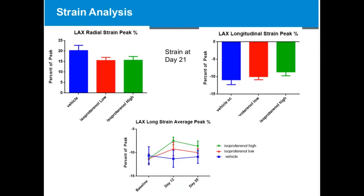If we look at the strain results, these two top graphs look at strain at the final day of the study, day 21. We can see a noted difference between low and high dose, although we don't see a dose-dependent effect when we look at radial strain. However, when we look at longitudinal strain, we do see that nice dose-dependent effect for our low and high dose of isoproterenol. And when we looked at strain imaging over time, we see that nice separation again and a dose-dependent effect at day 12. The advantage of strain imaging is that it allows you to see these changes much earlier than when you might see a change in fractional shortening.